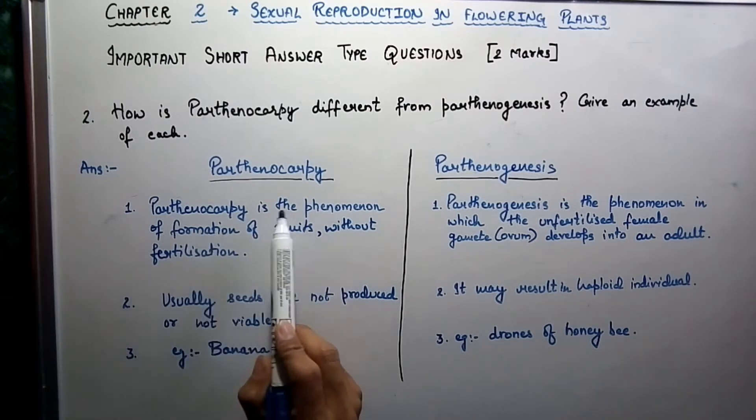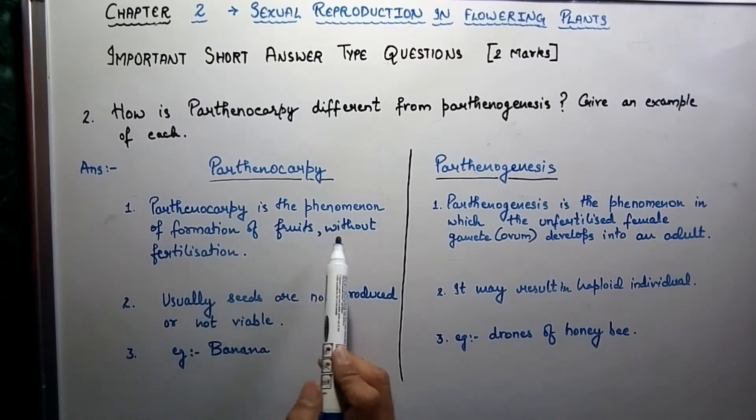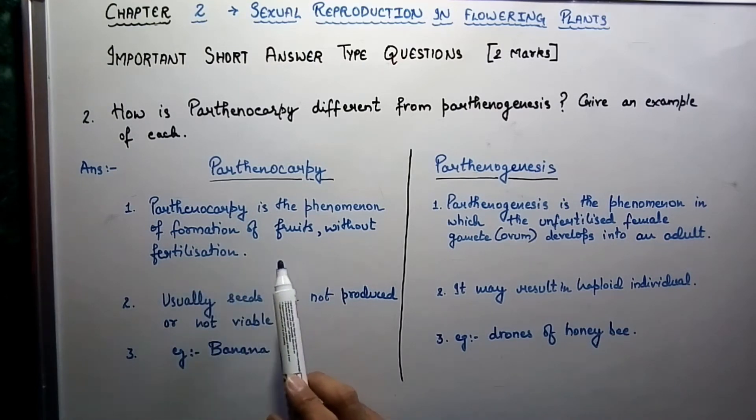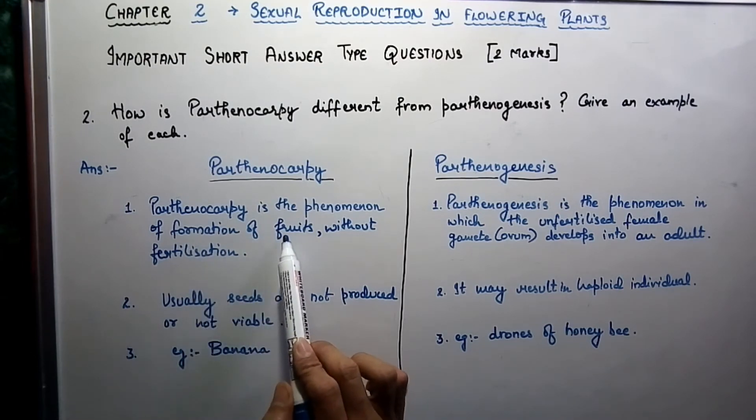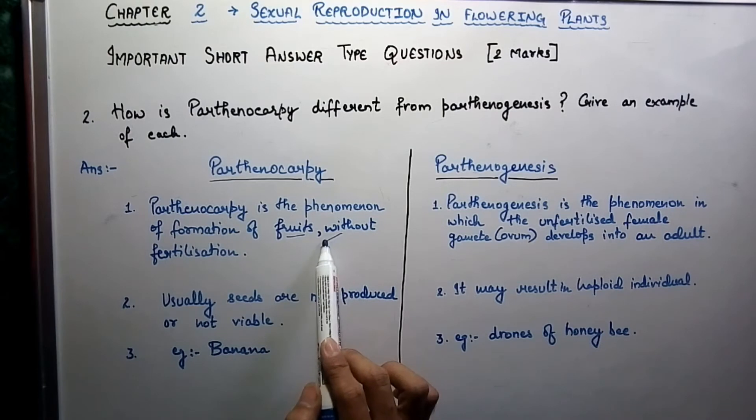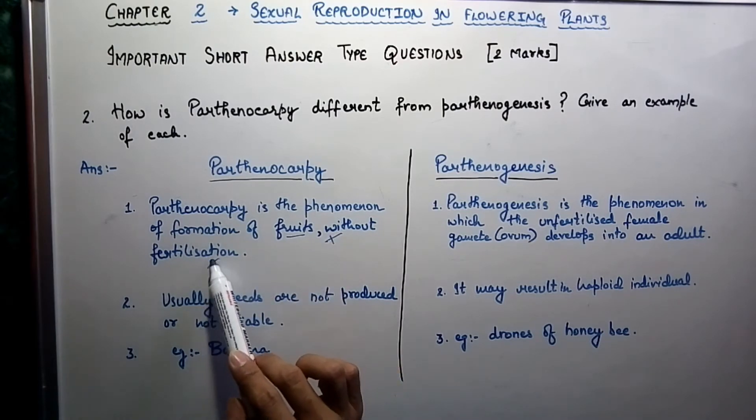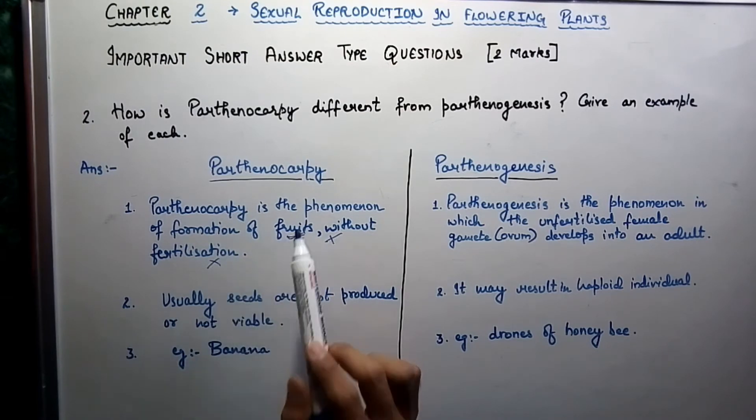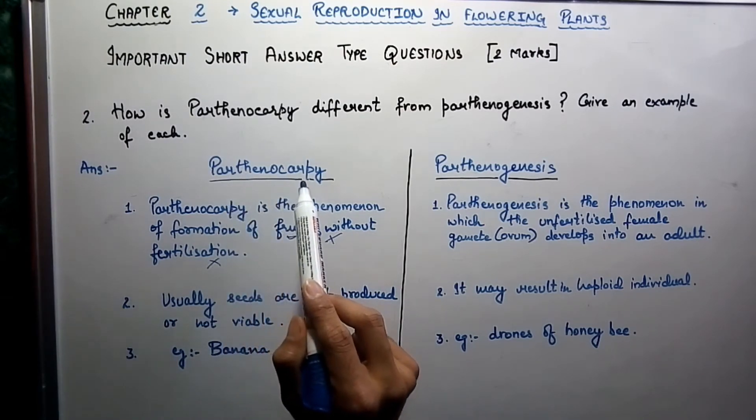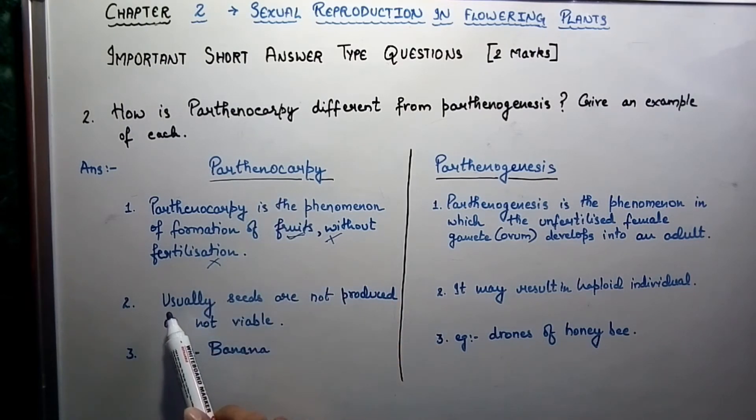Parthenocarpy is the phenomenon of formation of fruits without fertilization. It is a kind of process in which fruits form but it never involves fertilization. Usually seeds are not produced, and if they are produced they are not viable. The example is banana fruit.